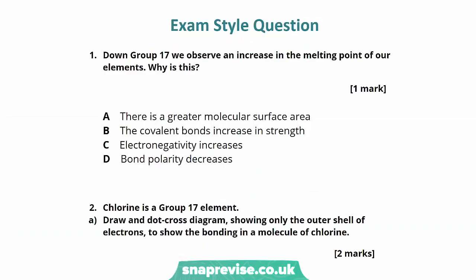Down group 17, we observe an increase in the melting point of our elements. Why is this? The trend in melting and boiling points is that down the halogen group we see an increase because the atomic and molecular size of the halogens increases, allowing for a greater surface area over which the intermolecular force of attraction can act. Looking at the options: A — greater molecular surface area — is correct. B — covalent bonds increase in strength — is incorrect. C — electronegativity increases — is incorrect. D — bond polarity decreases — is incorrect. So the correct answer is A.